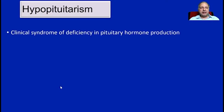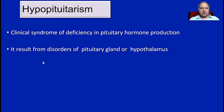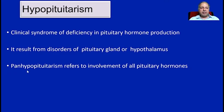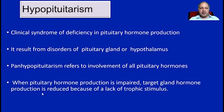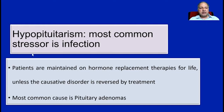Hypopituitarism is a clinical syndrome of deficiency in pituitary hormone production, resulting from disorders of the pituitary gland or the hypothalamus. Panhypopituitarism means there is involvement of all pituitary hormones in secretion and synthesis. When pituitary hormone production is impaired, target gland hormone production is automatically reduced due to lack of trophic stimulus, affecting all major target organs. Most common cause of hypopituitarism is pituitary adenomas, and patients are maintained on hormone replacement therapies for life unless the causative disorder is reversed.